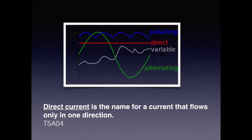Two types of current we need to understand are direct current and alternating current. Batteries are great examples of direct current, and household electricity is a good example of alternating current. Direct current tends to remain steady at a given voltage. Alternating current does as its name implies — it alternates between positive and negative in a sine wave type manner.